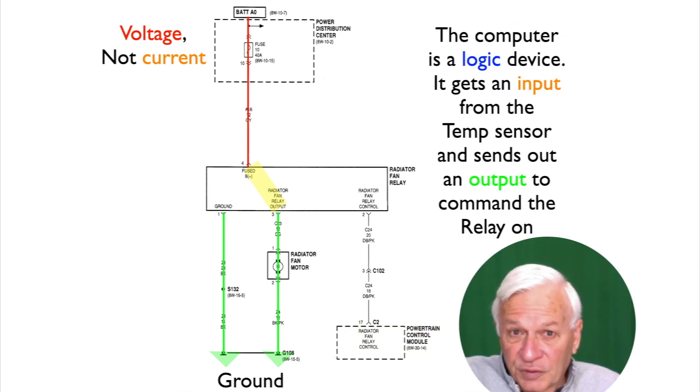The computer is a logic device. It gets an input from the temperature sensor and sends out an output to command the relay on. I've kept the colors consistent with their part of the circuit - blue is control, orange is current flow, and green is ground.